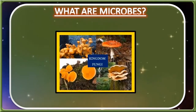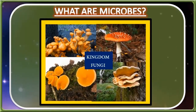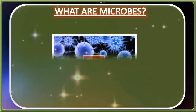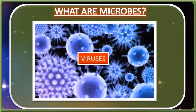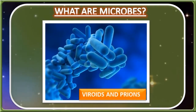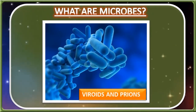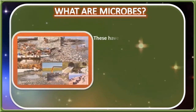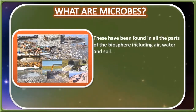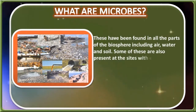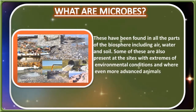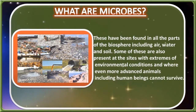Kingdom Fungi like rusts, smuts, molds, etc., and kingdom Protista, e.g. protozoans. Viruses, commonly called borderline organisms. Viroids and Prions are also included in microorganisms. Microbes occur in almost all parts of the world, found in all parts of the biosphere including air, water, and soil. Some are also present in sites with extremes of environmental conditions where even more advanced animals including human beings cannot survive.